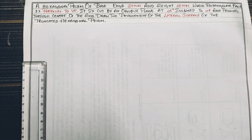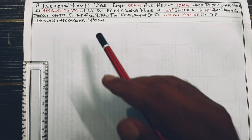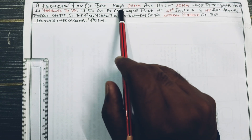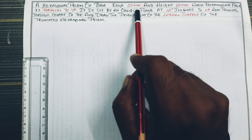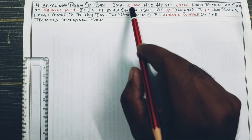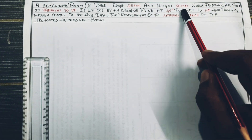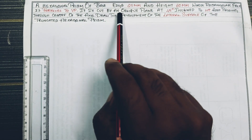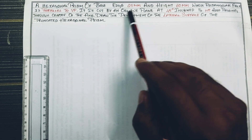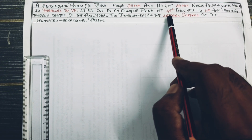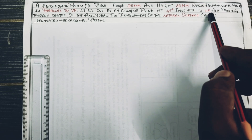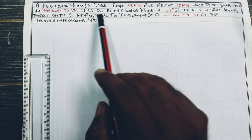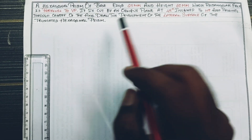Hi Buddies. So here we are going to be talking about the University paper. This hexagonal prism — the base edges are 25mm and the height is 60mm. The rectangular faces are parallel to the VP. It is cut by an oblique plane, where the axis is at 45 degrees inclined to HP, and passing through the center of the axis.